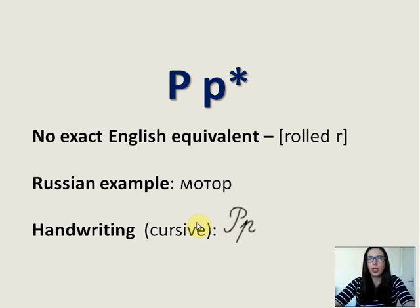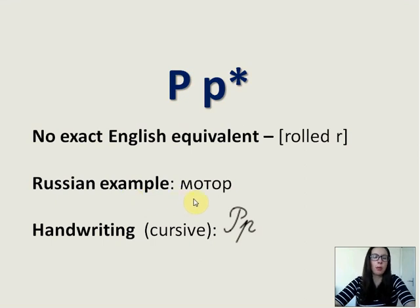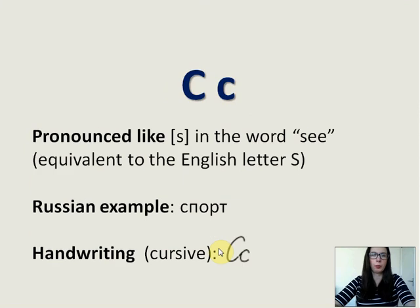Р — I think we cannot find an exact equivalent in English, because Russian Р is a little bit different. Russian Р is more rolled. Russian example: 'мотор,' which means motor. And here is the cursive.